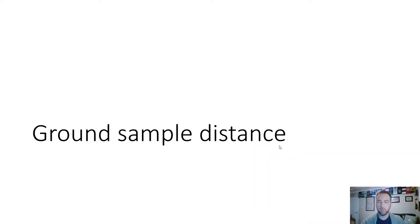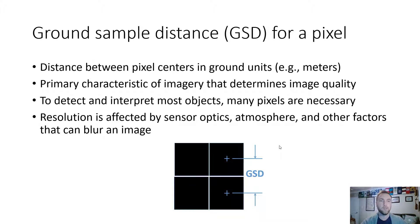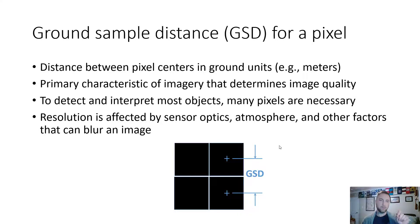Ground sample distance (GSD) for a pixel is the distance between pixel centers in ground units — essentially the spatial resolution representing the actual distance between the centers of adjacent pixels as measured on the ground. When it comes to remote sensing, instead of just talking about resolution, the term used is ground sample distance. The primary characteristic of imagery that determines image quality is its GSD. To detect and interpret most objects, many pixels are necessary — obviously that increases file size, but the higher the resolution, the greater the detail and the greater the information that can be pulled from the photo. Resolution is affected by sensor optics, the atmosphere, and other factors that can blur an image.